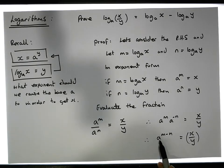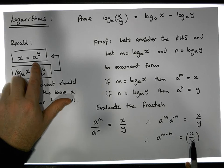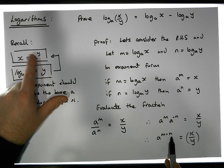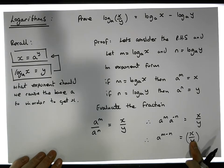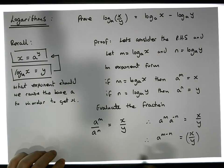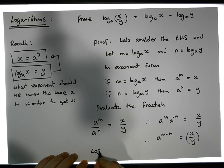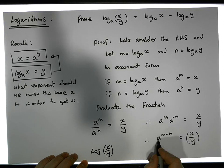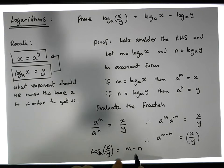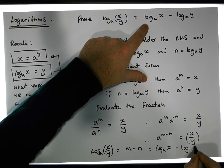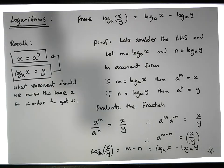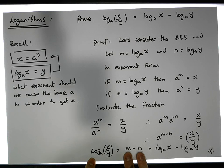What we have here is some number raised to a particular power equal to some other number — exactly the same form as our logarithm definition. So this tells us that the log of x over y to the base a must be equal to m minus n. And since m minus n equals log of x to the base a minus log of y to the base a, this completes our proof. The log of x over y to the base a is simply equal to the difference between the two logarithms.